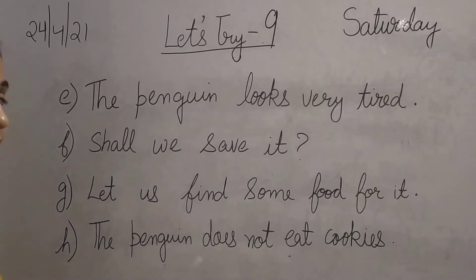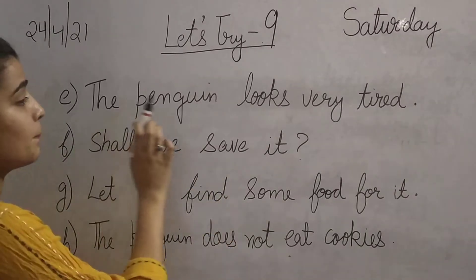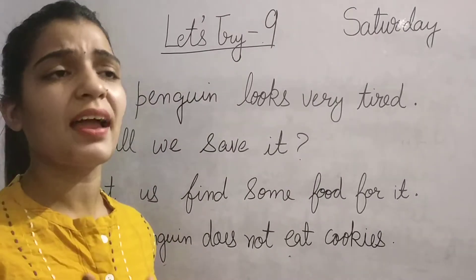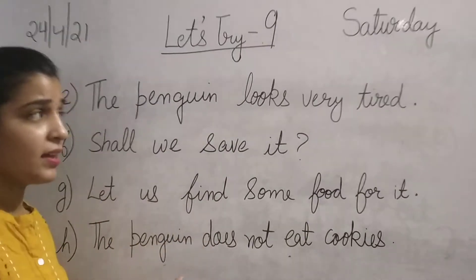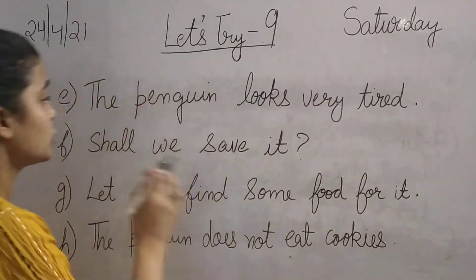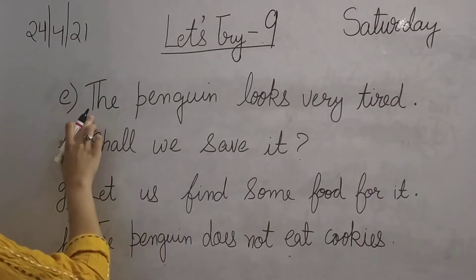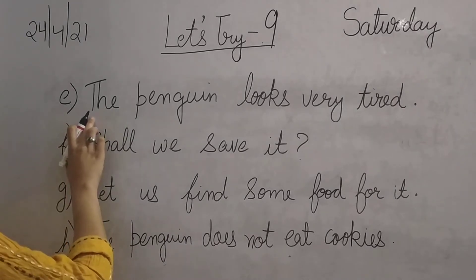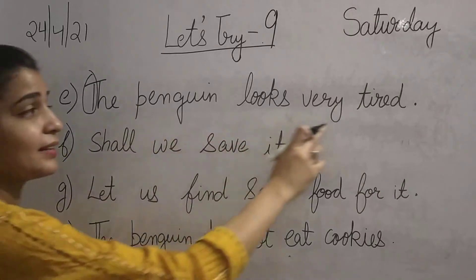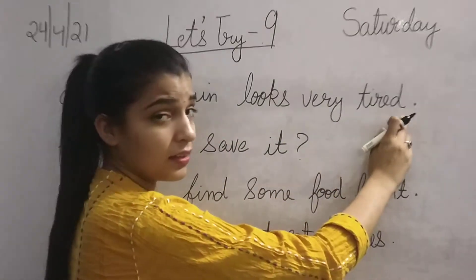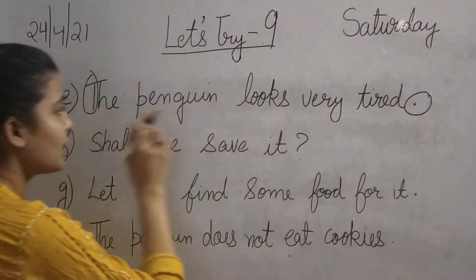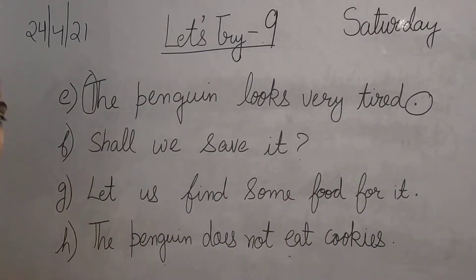The next sentence is: 'The penguin looks very tired.' Penguin bahut tired dikhai de raha hai. The first letter T is capital, so we will circle T. And at the last there is a full stop, so we will circle the full stop. It means there are two punctuation signs in this sentence.